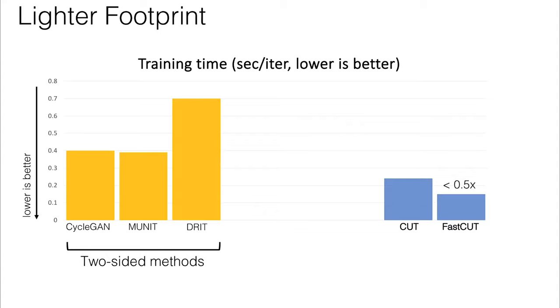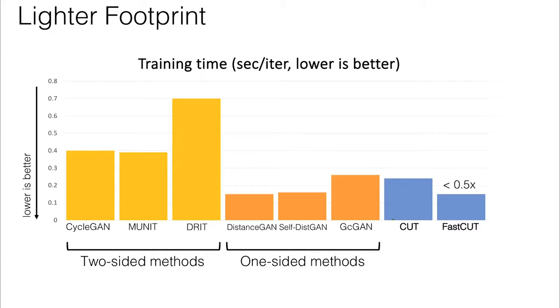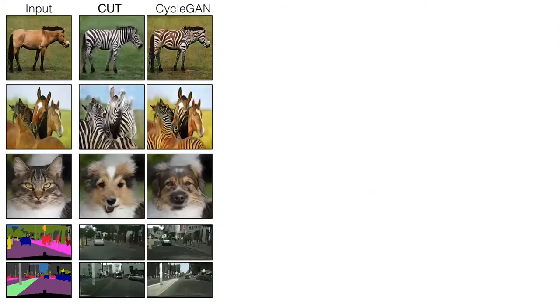Here's some other unpaired image translation methods. The two-sided methods, which require cycle consistency, take either the same or more time than CycleGAN. The one-sided methods take much less time, and our FastCUT model ends up being equal to those in terms of runtime.